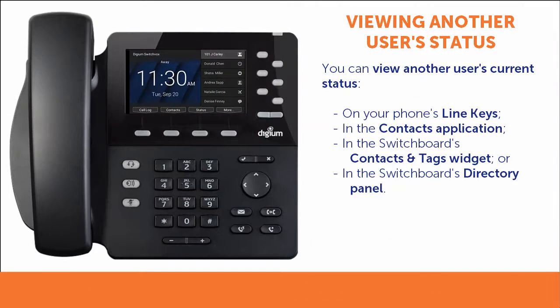You can see the current status of others on your phone's line keys, in the contacts application, or in the switchboard in either the contacts and tags widget or in the directory panel.